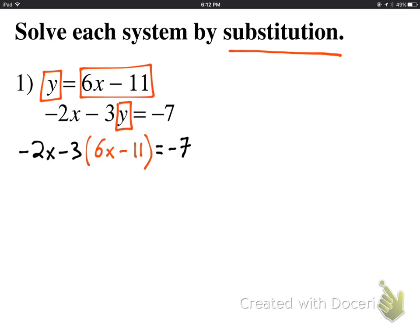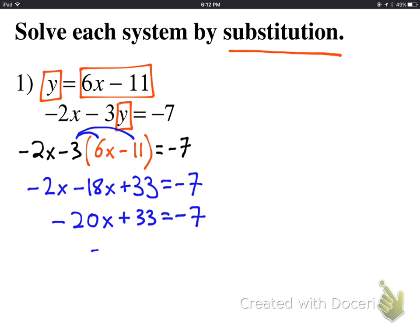The reason we do this is now we have an equation with only one variable, x. So we can distribute and solve for this equation and get x. As I distribute, I get this, followed by combining like terms and moving things around. When we divide by negative 20 here, we get x equals 2.